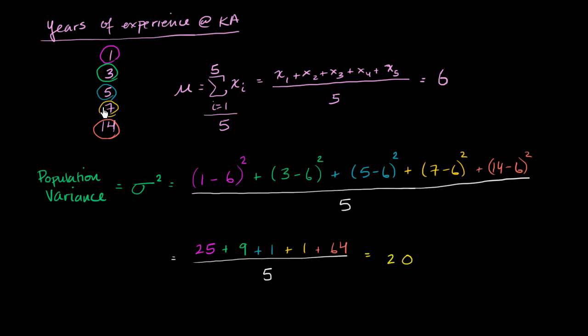You might say these values aren't 20 — but remember, it's the squared distance away from the population mean. I squared each of these things because it makes them positive, and we'll see later it has other nice properties.